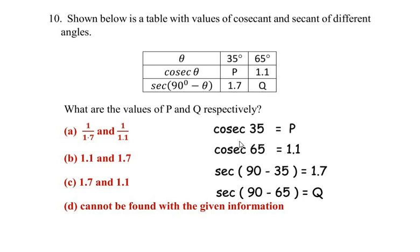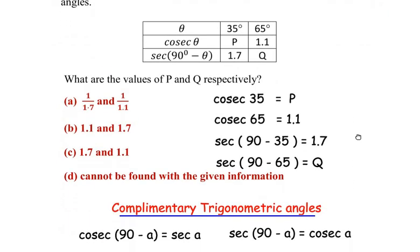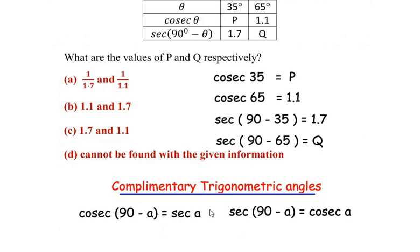Now we need to know a relationship between the cosecant and the secant, and the relationship is called the complementary trigonometric ratios. Let me write here. So here you can see this is the relationship between the cosecant and the secant.